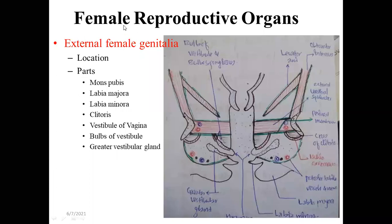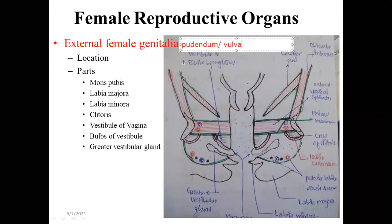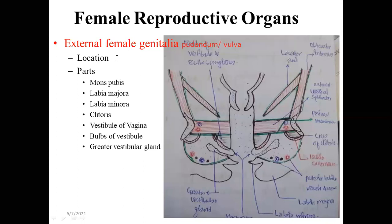The external female genitalia are also termed as pudendum or vulva. Regarding location, they lie within the perineal space, superficial to the urogenital diaphragm. So the external female genitalia are found in the superficial perineal space specifically.